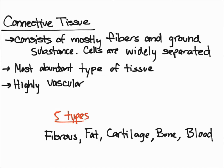There are five types of connective tissue to remember. Those five types are: fibrous tissue, fat, cartilage, blood, and bone. So those are the five types of connective tissue.